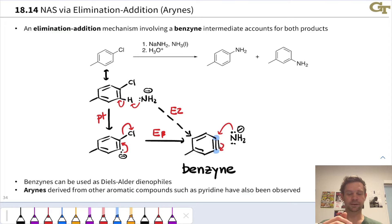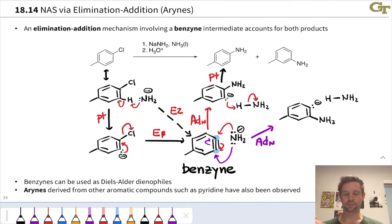Addition to the top carbon takes us to the product that would be expected via standard SNAR addition elimination with the NH2 group para to the methyl. However, addition to the bottom carbon takes us to a product after proton transfer to this phenyl anion with the amino group at carbon 2, in which the amino group is now meta to the methyl group.